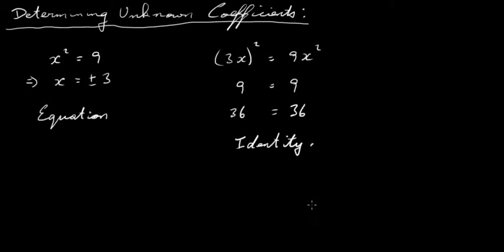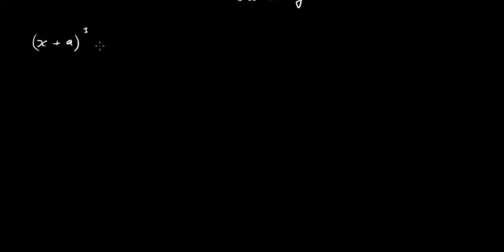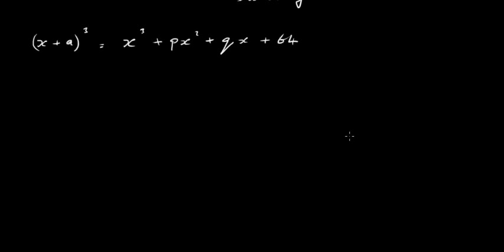So we're going to look at identities. We're going to look at this particular identity: x plus a, all cubed, is equal to x cubed plus px squared plus qx plus 64. This is an identity — the left-hand side is equal to the right-hand side for all values of x. What we've got to do is find out what a is, find out what p is, and find out what q is. So we're looking for these unknown coefficients.